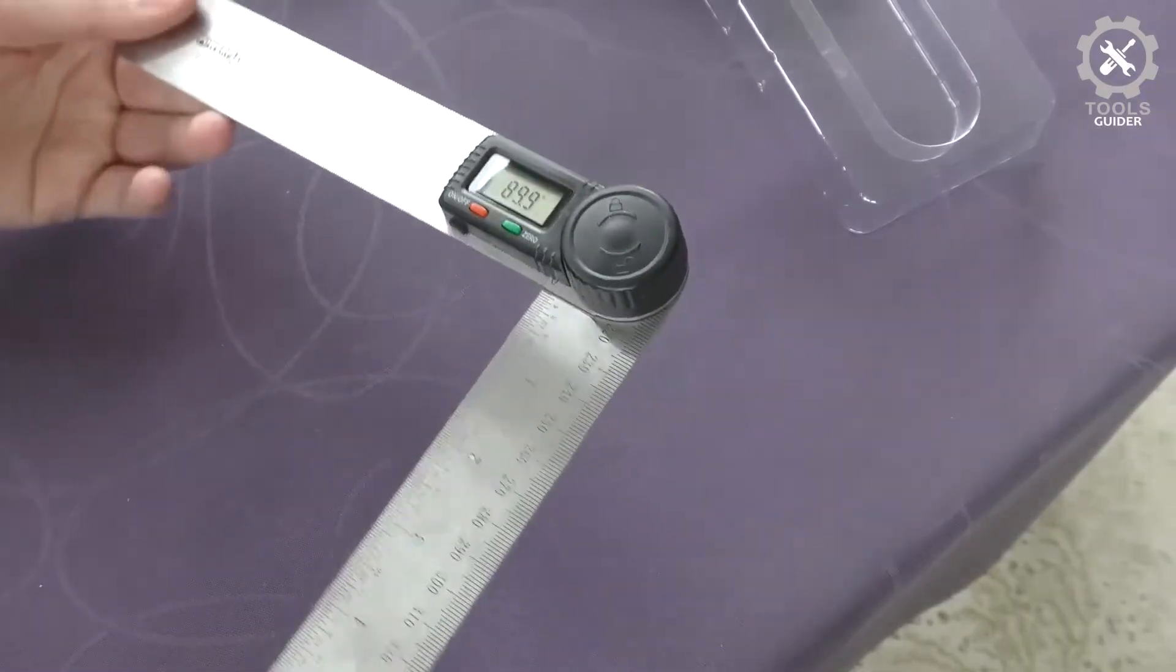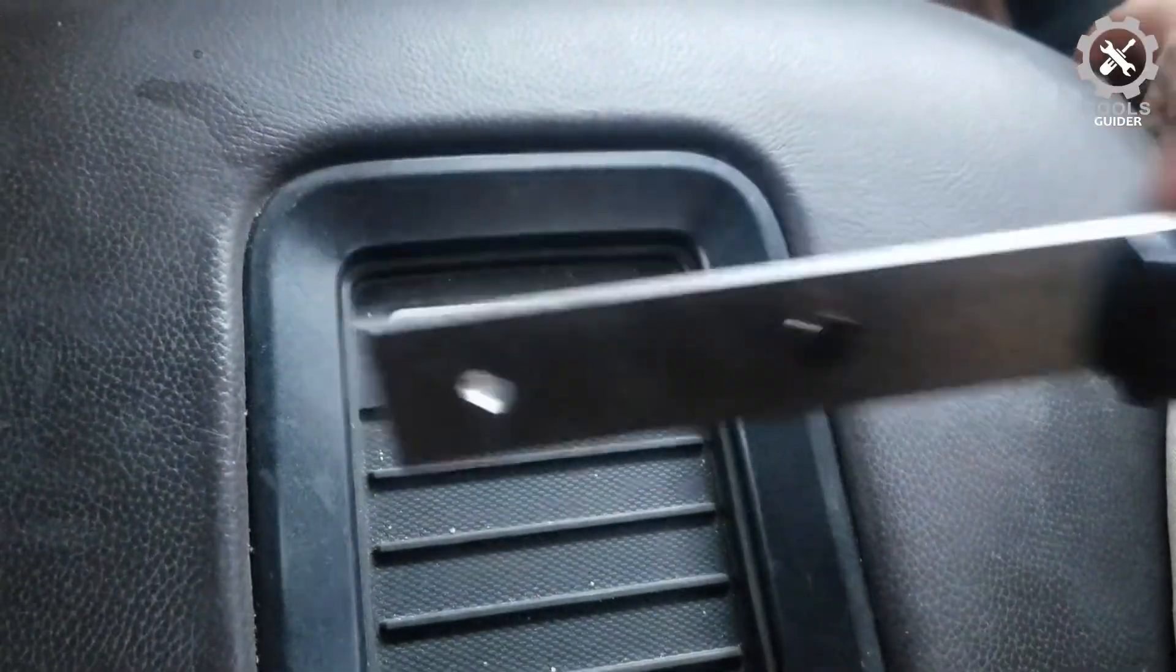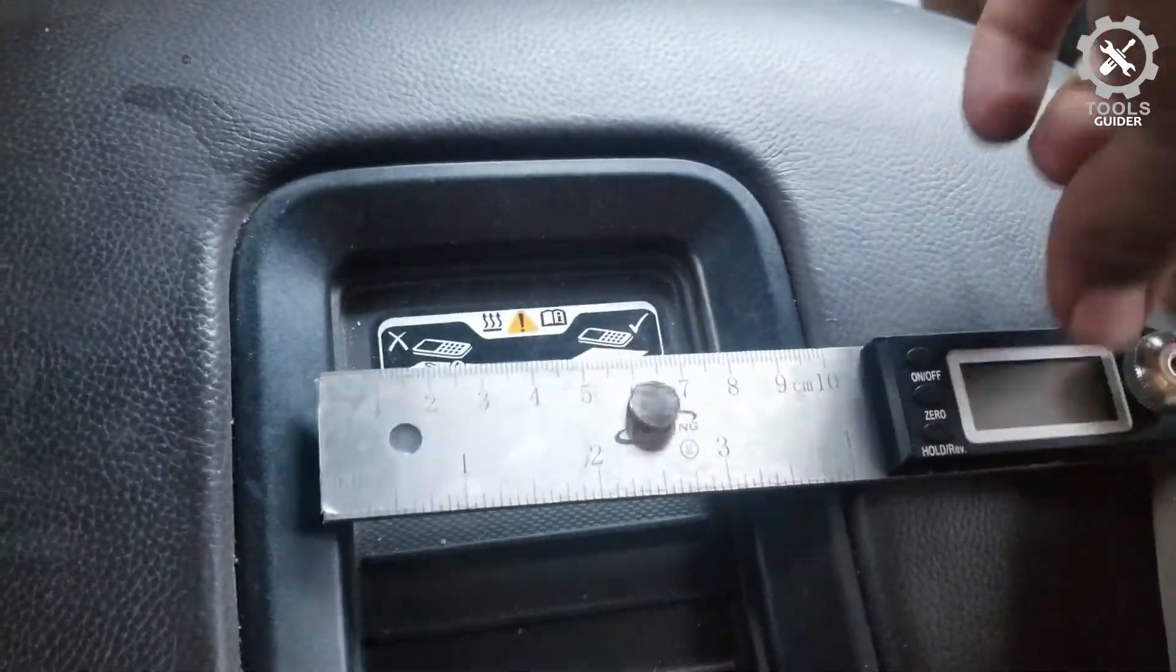There are three buttons for power, hold and reverse, and a zero button, making it easy to use. The battery is included when buying the tool.